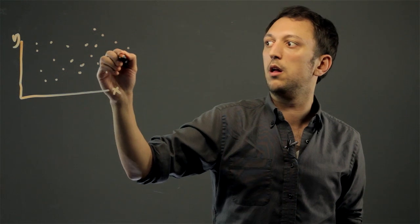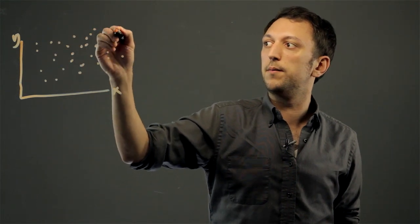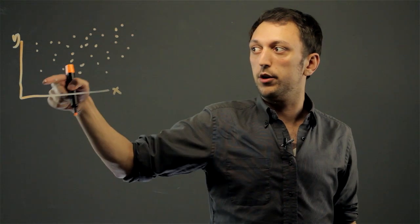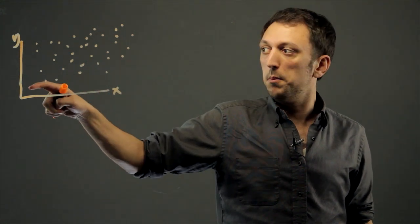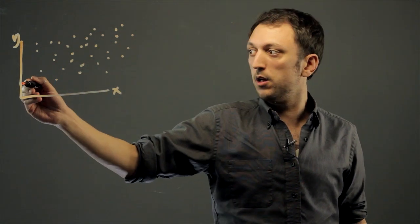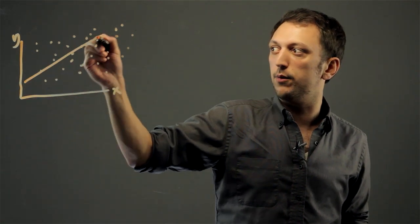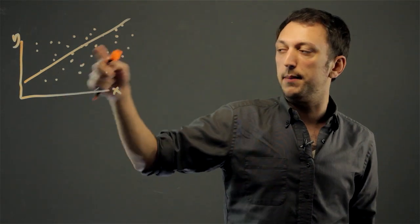And what the line of best fit would be, would be a line that we try to draw that captures most of the data, or that goes through and is closest to most of the data. So it looks like the line of best fit would be something like that, maybe a little lower.